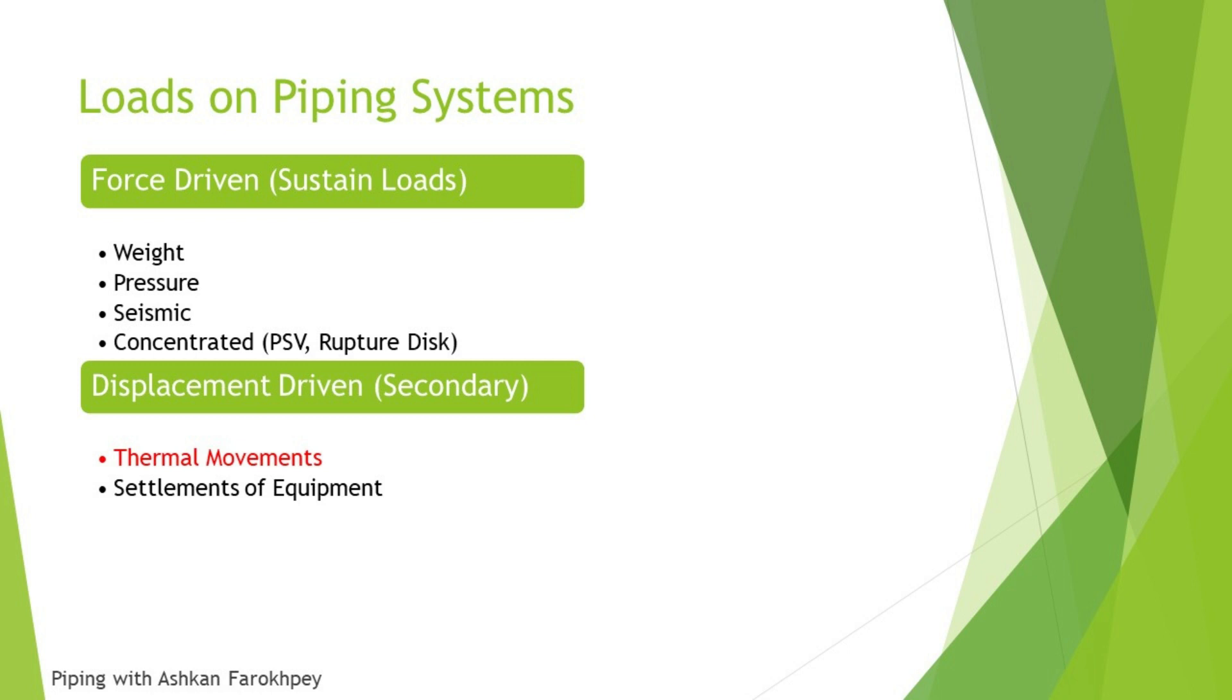As you know, we have two main types of loads on piping systems. The first group is the force-driven loads which we know as sustain loads. They can be listed as weight, the loads that come from the weight of the piping system, the pressure which is mostly the internal pressure that comes from the fluid passing through our piping system, the seismic loads that come from earthquakes and movements from earth or wind.